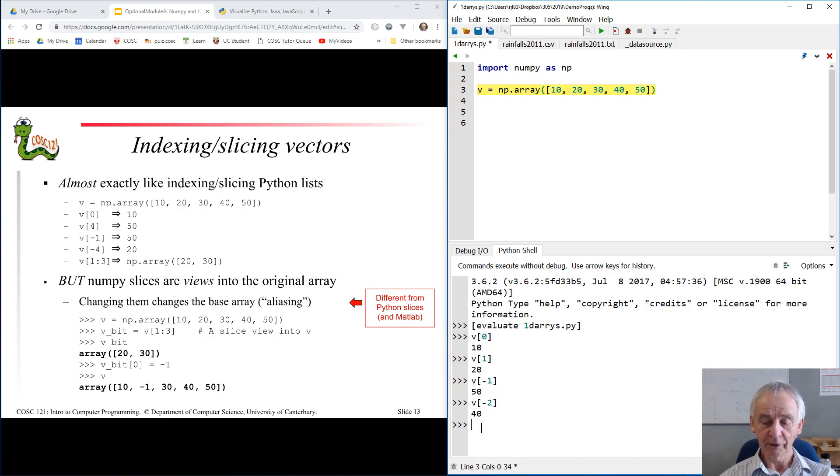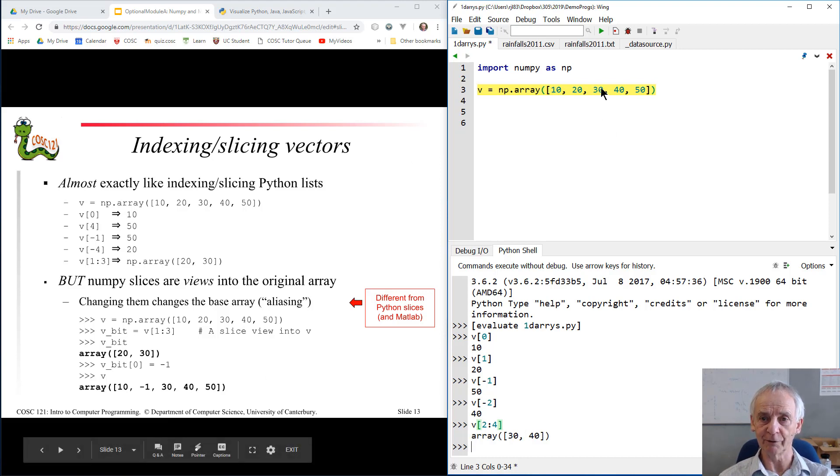I can also slice, as I could with Python lists, by using a colon in the index. So let's go from 2 to 4. Now, remember, this is Python. That's 2 up to, but not including 4. So I get the 30, 40 element there.